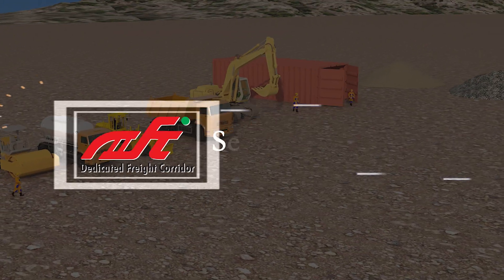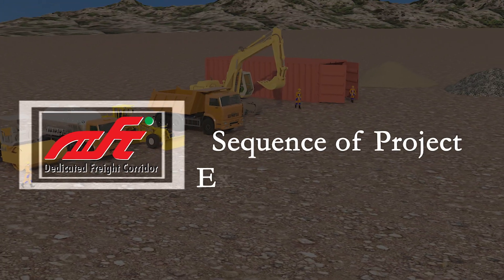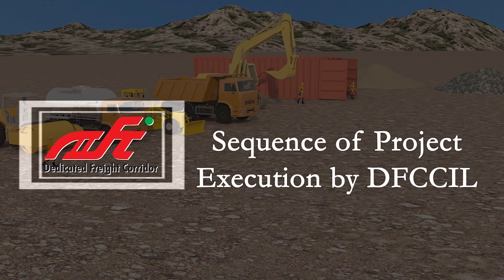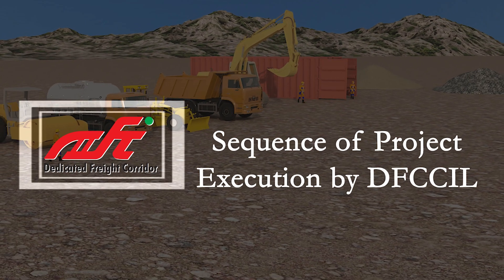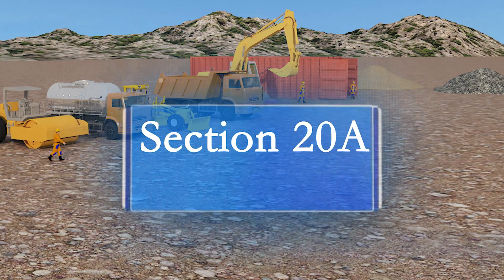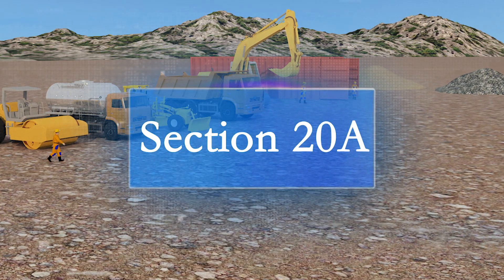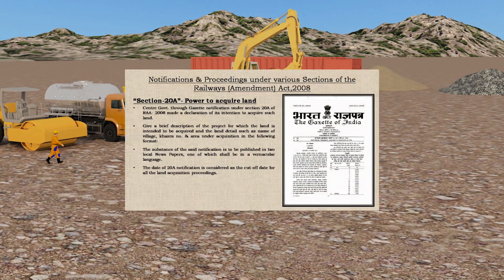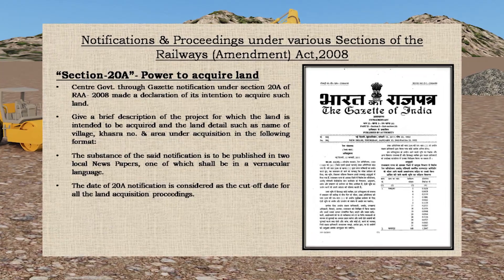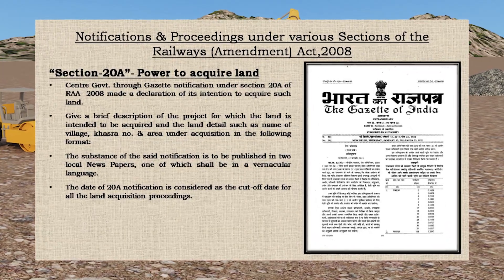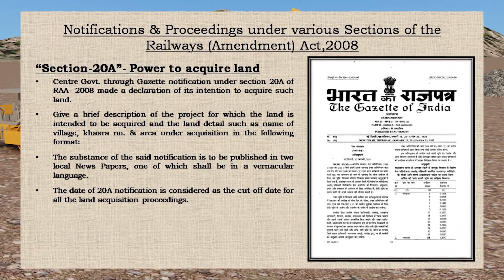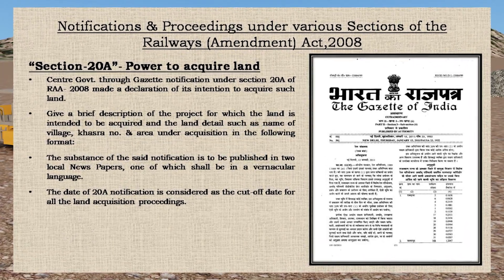Sequence of Project Execution by DFCCIL. Section 20A: The Central Government, through a Gazette notification, made a declaration of its intention to acquire land.